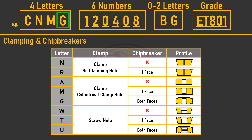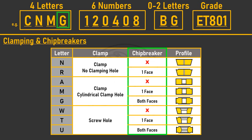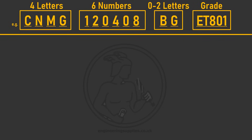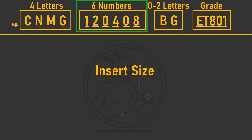The fourth letter splits inserts into three clamp types: one — no center hole, positive relief clamp-down inserts; two — cylindrical clamp hole, negative relief clamp-down inserts; three — screw hole, screw-down inserts. It also indicates whether the insert has a chip breaker on one or both faces. In our example CNMG, the G tells us it is a negative insert held by a clamp with a chip breaker on both faces, whereas CNMM would have a chip breaker on only one face.